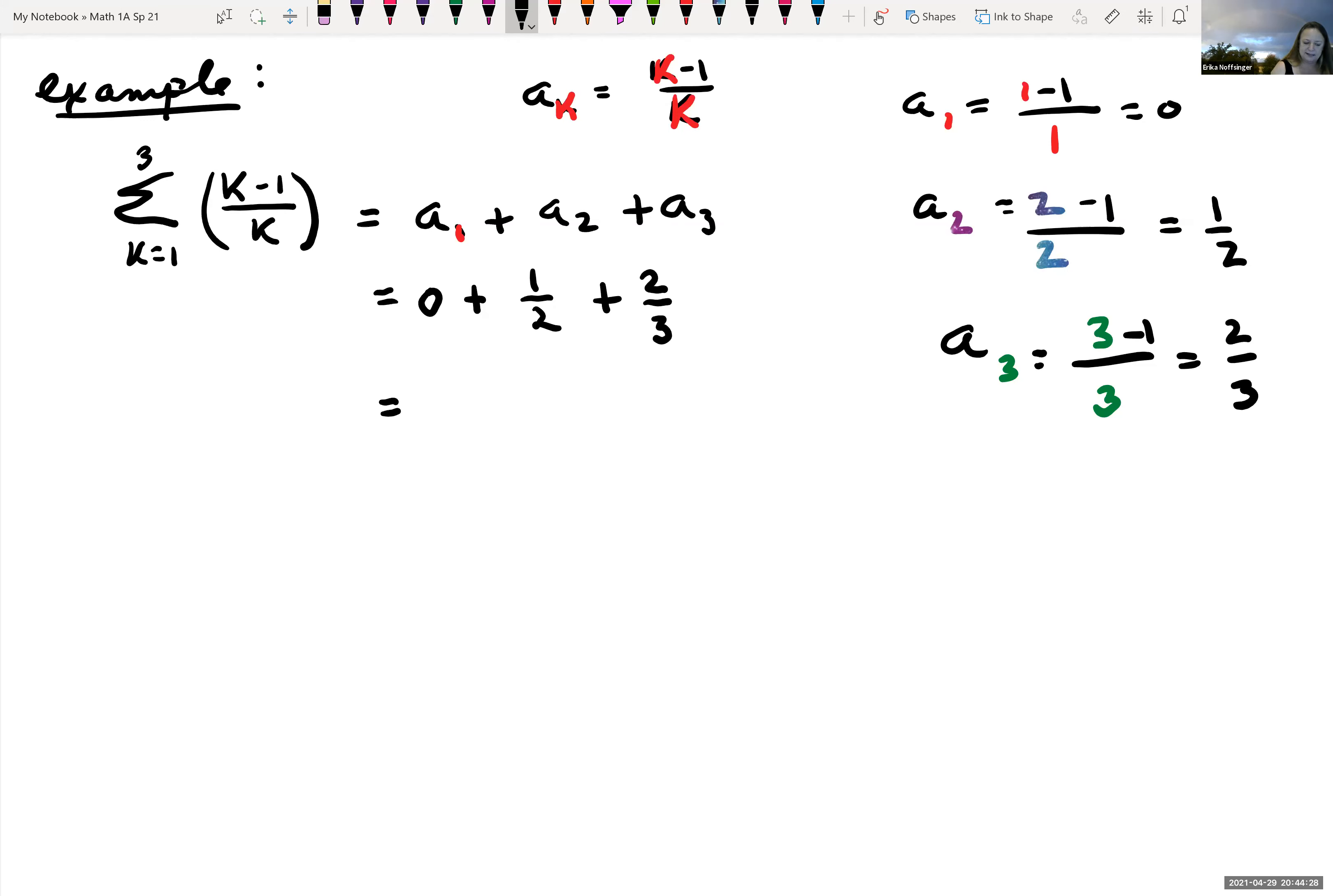Common denominator would be six. And so we could rewrite one half as three sixths plus common denominator. Again, it's six. So we can rewrite two thirds as four sixths, which would give us seven sixths.